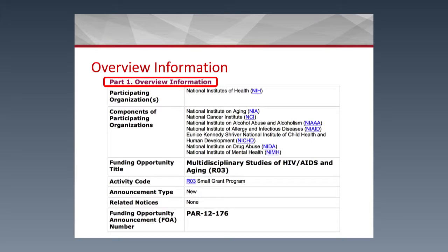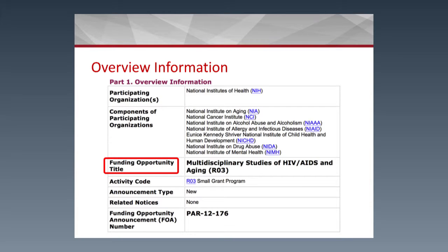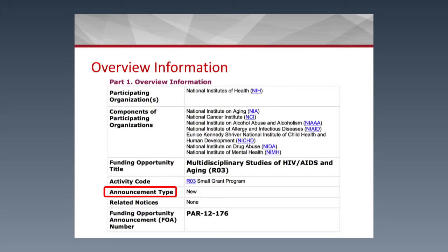Part 1 is an overview of the information. It includes the participating organization — in this case, NIH — and the components of the participating organizations, which can range from one up to all. In this case, we're number 4 or 5 down: the NICHD. The Funding Opportunity Title in this case is an R03 for HIV/AIDS mechanisms. The Activity Code is a small grant program, and it provides information on the announcement type — in this case, it's new, though sometimes it's a recompete or renewal. Related notices, if any, will be reflected here, along with the Funding Opportunity Announcement number.